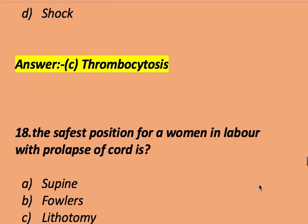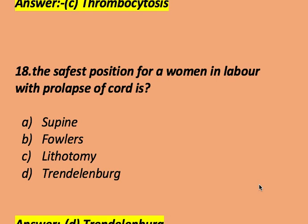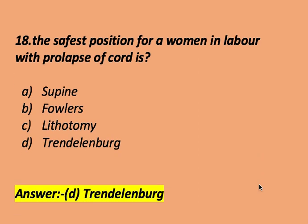The safest position for a woman in labor with prolapse of cord is: supine, Fowler's, lithotomy, or Trendelenburg. The right answer is Trendelenburg. The safest position for a woman in labor with prolapse of cord is Trendelenburg.